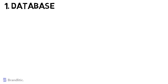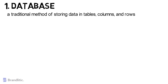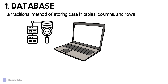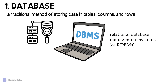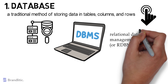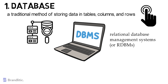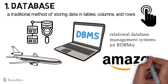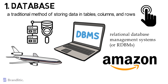A database is a traditional method of storing data in tables, columns, and rows. This allows for easy data query and processing. Databases are typically controlled by database management systems, or DBMS, with relational database management systems, or RDBMS, being the most popular subset. Businesses typically use databases for quick data access — for example, an airline might rely on a database to process customers' online ticket purchases, and an e-commerce company like Amazon might use databases to track inventory levels and recommend products.